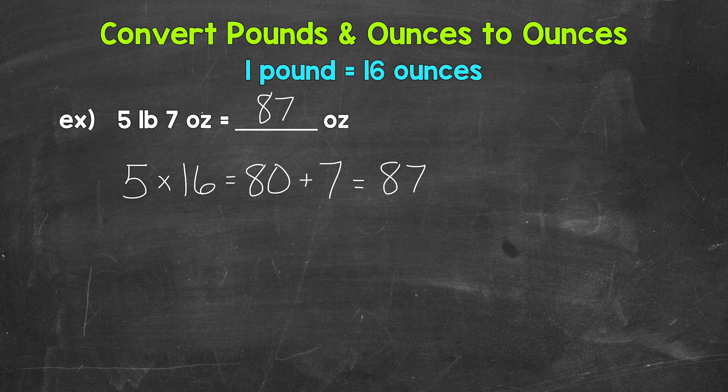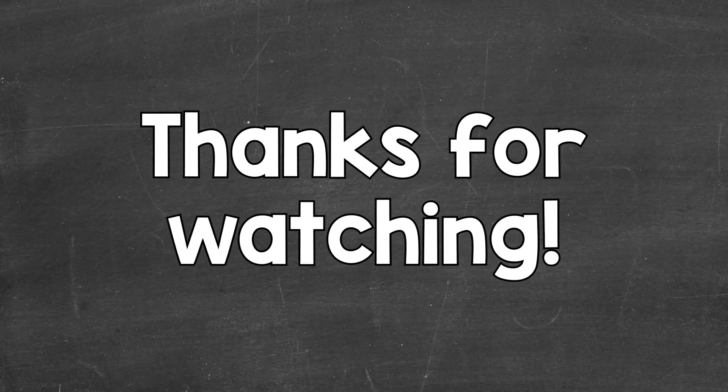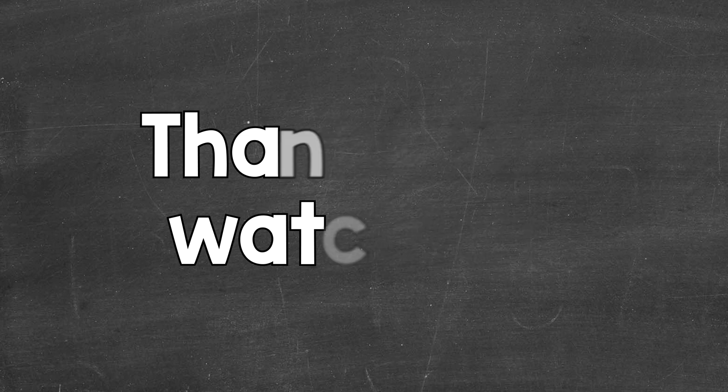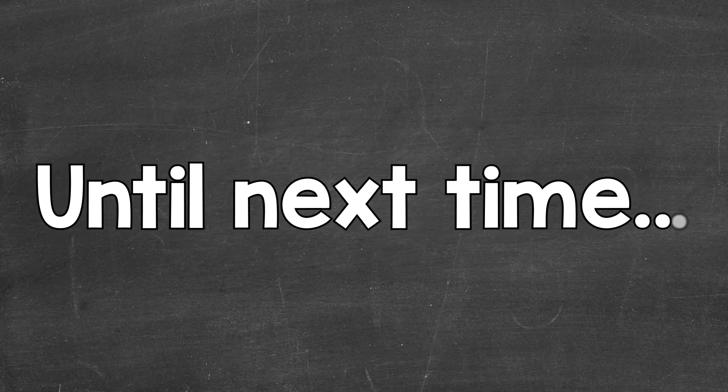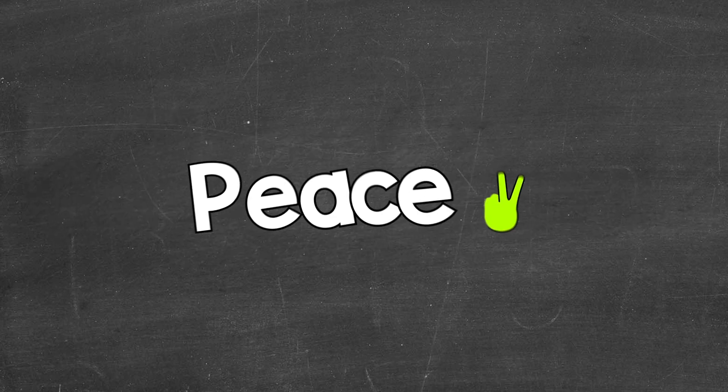And that's our answer. So there you have it — that's how to convert those mixed units of pounds and ounces to just ounces. Convert the pounds to ounces and add that to the other ounces we have. I hope that helped. Thanks so much for watching. Until next time, peace.